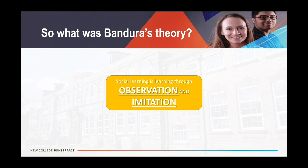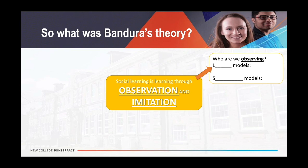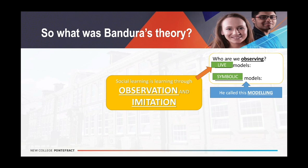Social learning theory — SLT — is learning through observing and imitating: watching and copying. Bandura repeatedly refers to modelling in his video. Through modelling — i.e. observing and imitating — we learn to copy the behaviour of others. We can observe two different types of models: live models, who are people right there in front of us, and symbolic models, who are people we see in the media, news, TV programmes, fashion, and so on. Bandura argued that both types of model are equally as influential.